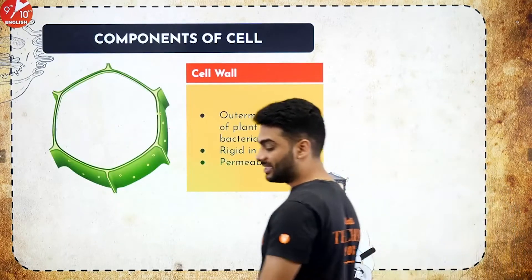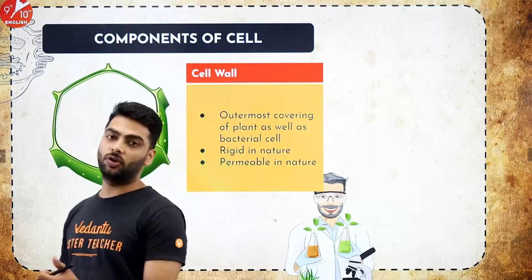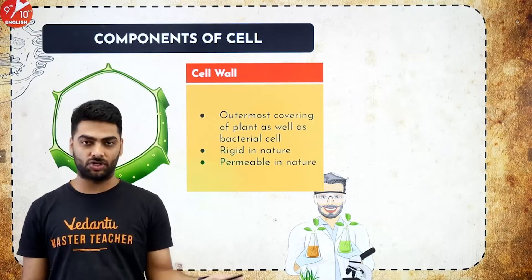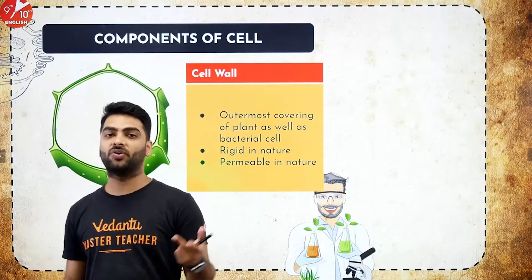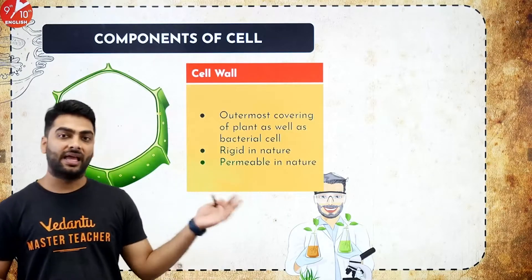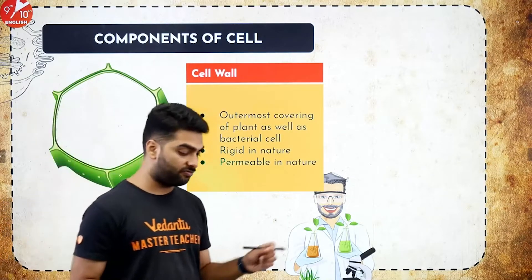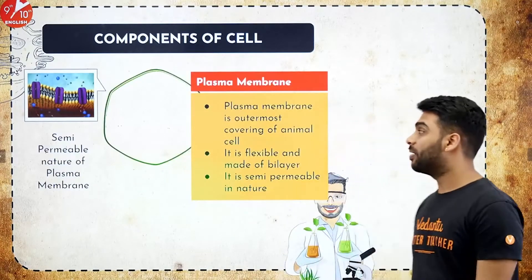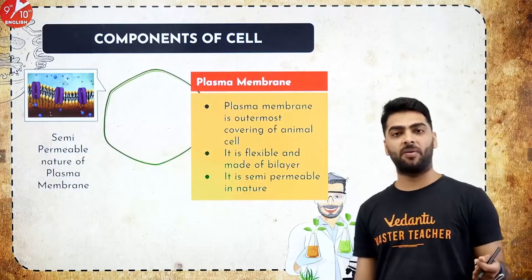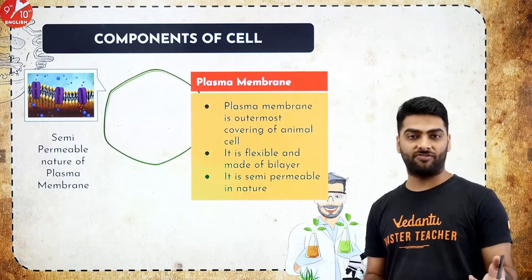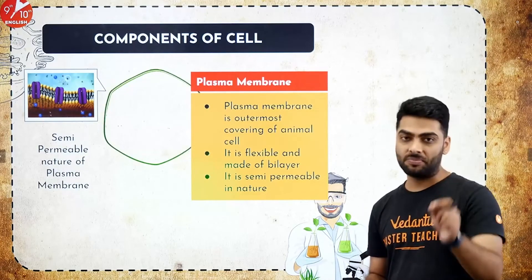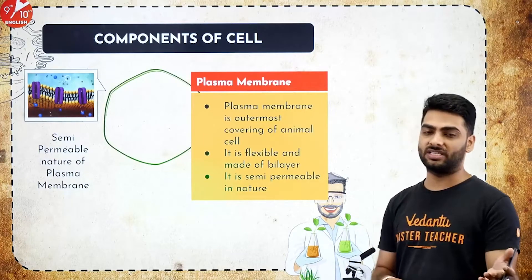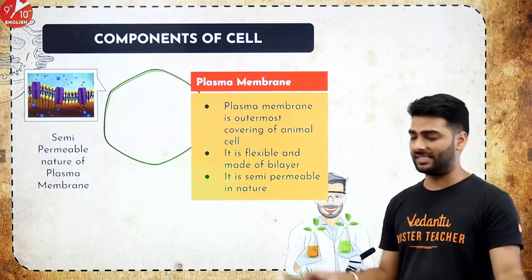The cell wall is made up of cellulose in green plants, lignin in fungi like mushroom, and peptidoglycan in bacteria. It is a freely permeable membrane that gives structure to the cell. The cell membrane, also called the plasma membrane, is made up of lipids and proteins. It is semi-permeable in nature — it only allows certain molecules in and out of the cell, and is present in all cells.